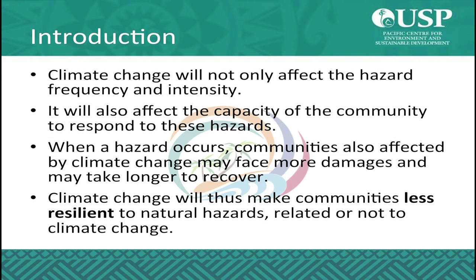Climate change will not only affect the hazard frequency and intensity, but it will also affect the capacity of the community to respond to these hazards. When a hazard occurs, communities that are also affected by climate change may face more damages and may take longer to recover. For example, a community whose crops are limited due to excess salt in the soil will have less food reserve if an event like a cyclone occurs. So climate change would make the community less resilient to natural hazards, even if those hazards are not related to climate change.